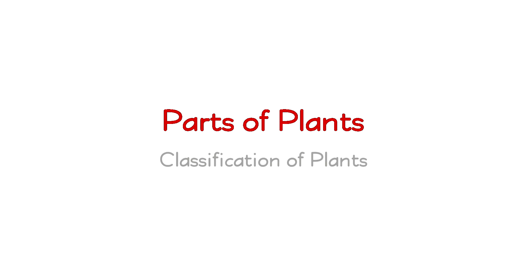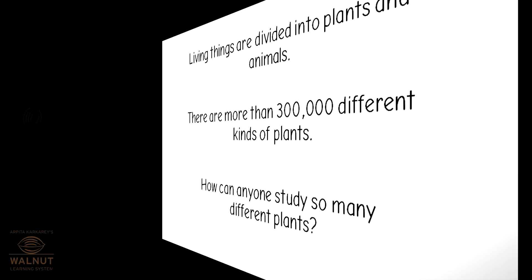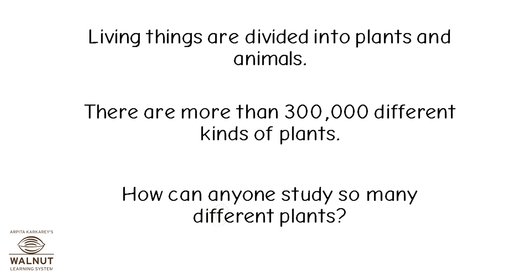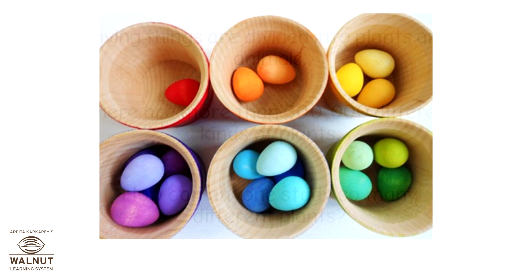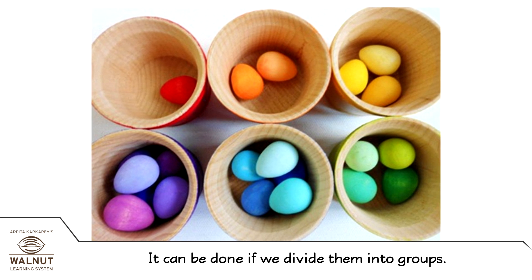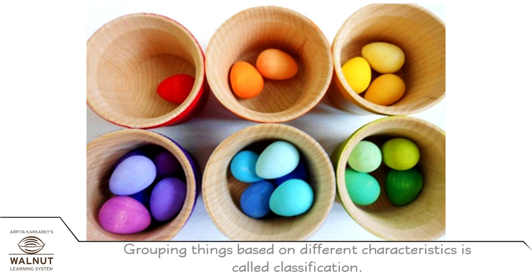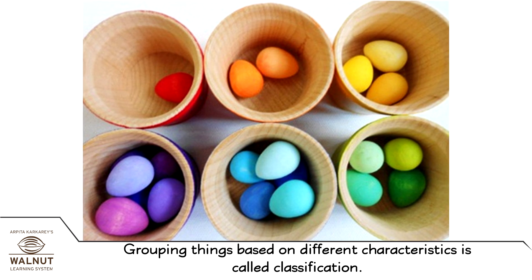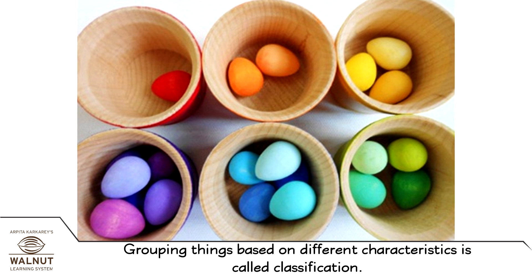Parts of Plants: Classification of Plants. Living things are divided into plants and animals. There are more than 300,000 different kinds of plants. How can anyone study so many different plants? It can be done if we divide them into groups. Grouping things based on different characteristics is called classification.